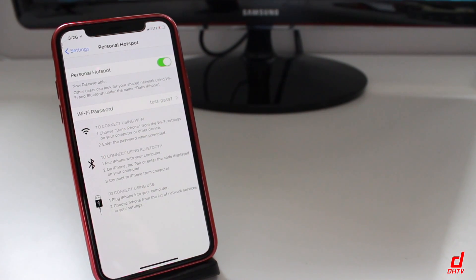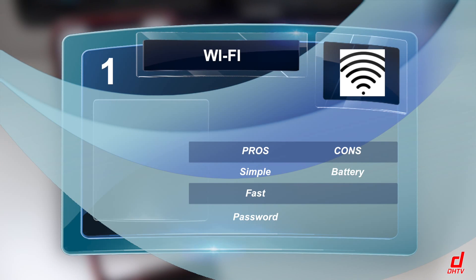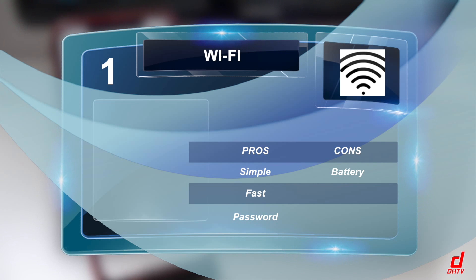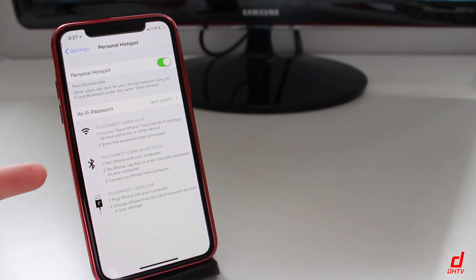When it comes to choosing which option to use, here are some pros and cons. Starting with Wi-Fi — this is my personal favorite. It's easy and simple to connect on any device, and you're secure with a password. The downside is that it burns through your battery fairly quickly.